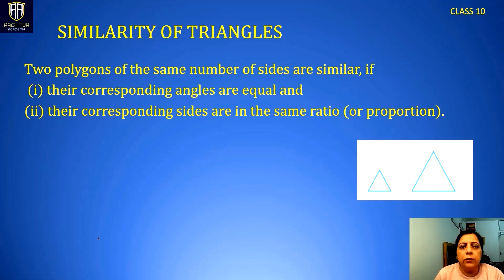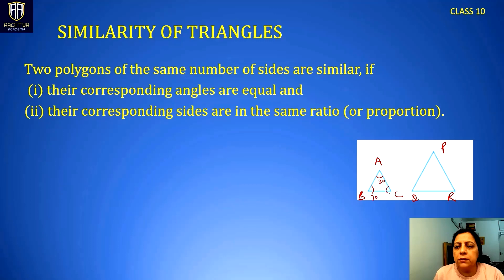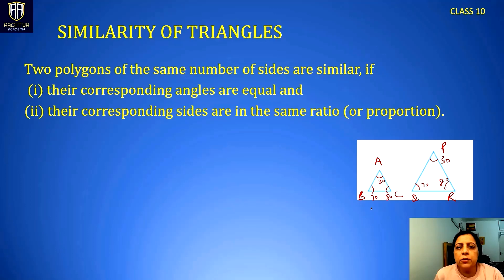Now we are talking about similarity of triangles, since the chapter is about triangles. Two polygons of the same number of sides are similar if their corresponding angles are equal. If triangle ABC has angles 30, 70, and 80, then triangle PQR must also have angles 30, 70, and 80 respectively. Two polygons of the same number of sides are similar if their corresponding angles are equal and their corresponding sides are in the same ratio or in proportion.